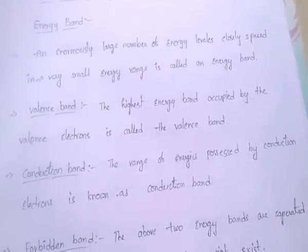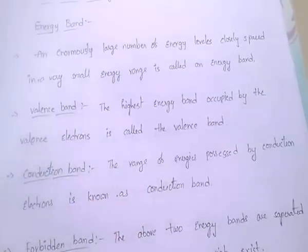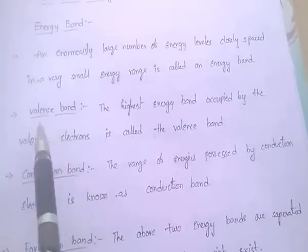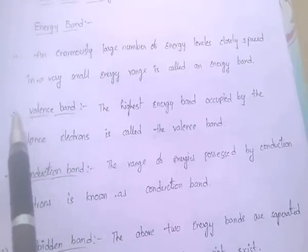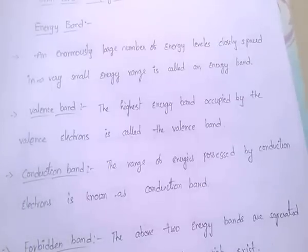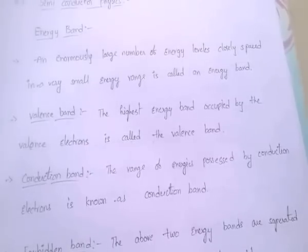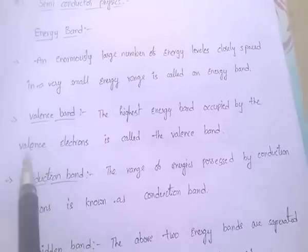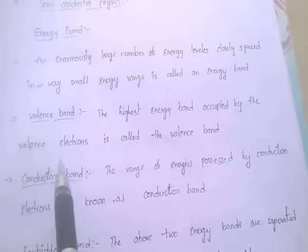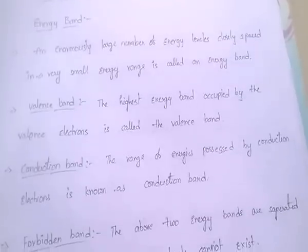Next, valence band. The highest energy band occupied by the valence electrons is called valence band. This band is occupied by valence electrons.